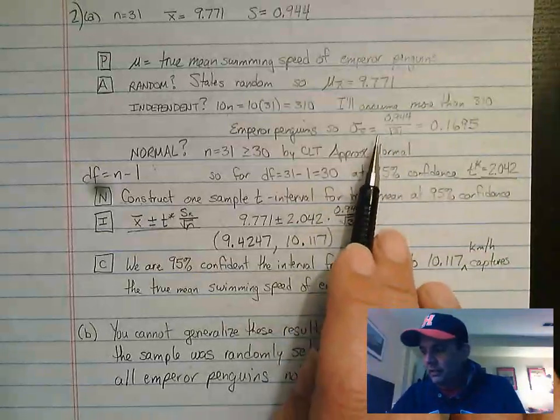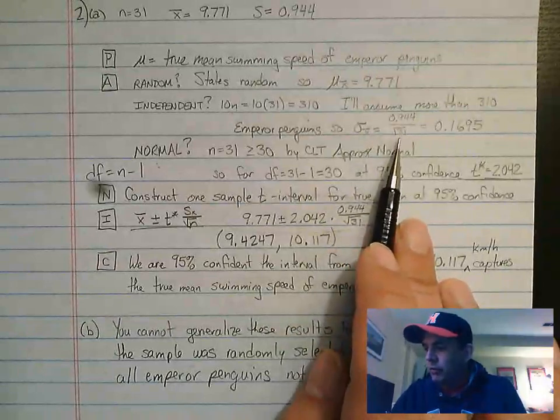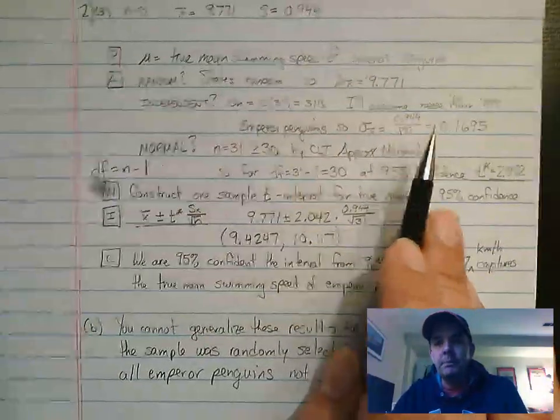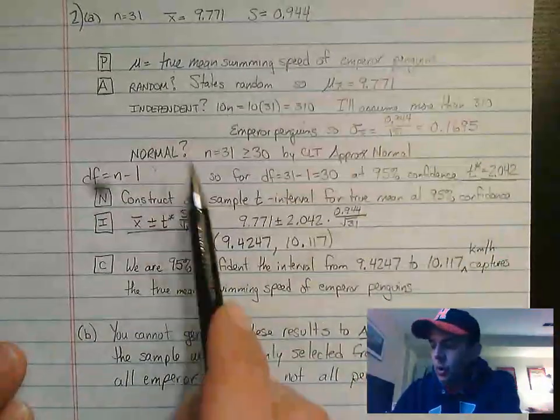The standard error is sigma of x bar: 0.944 divided by the square root of 31. And that simplifies to 0.1695.